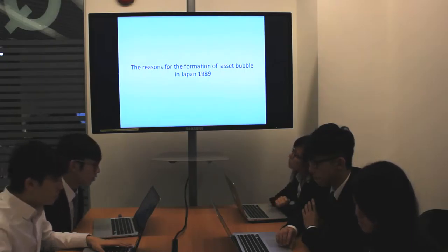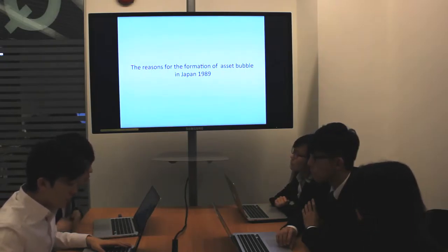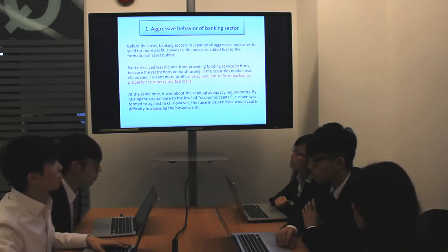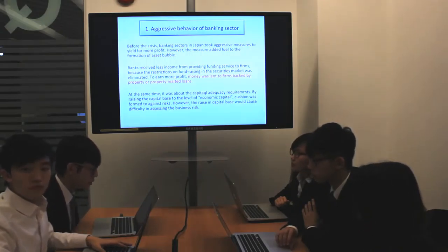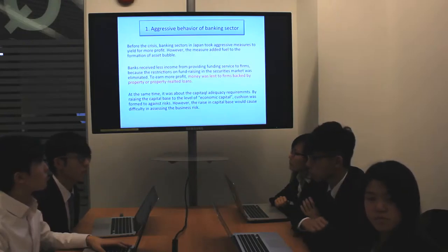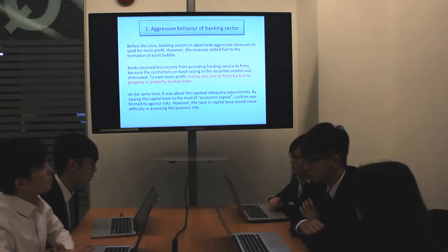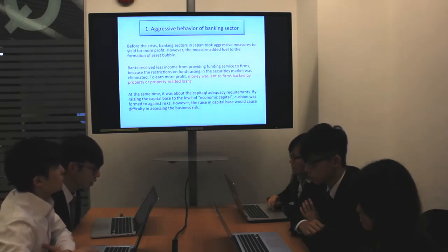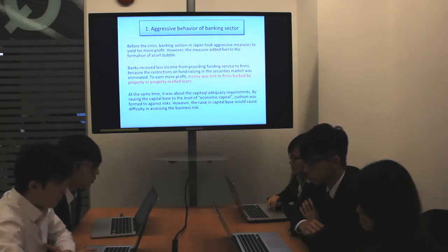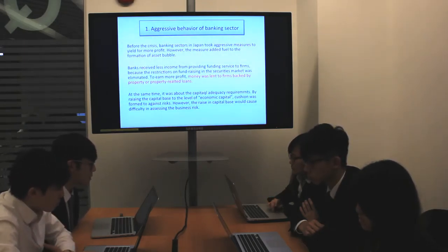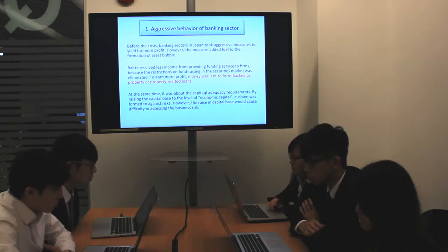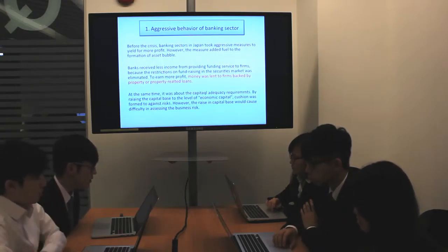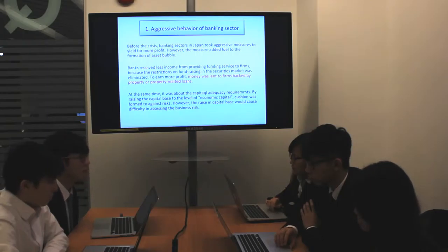Here are the reasons for the formation of the asset bubble in Japan. First of all, it was about the aggressive behavior of the banking sector. To gain more profit, banks lent to small firms backed by property or property-related loans. Also, it was about the matter of capital equity requirements — it was more difficult to assess the business rates due to the increase in capital base as a method against risk.